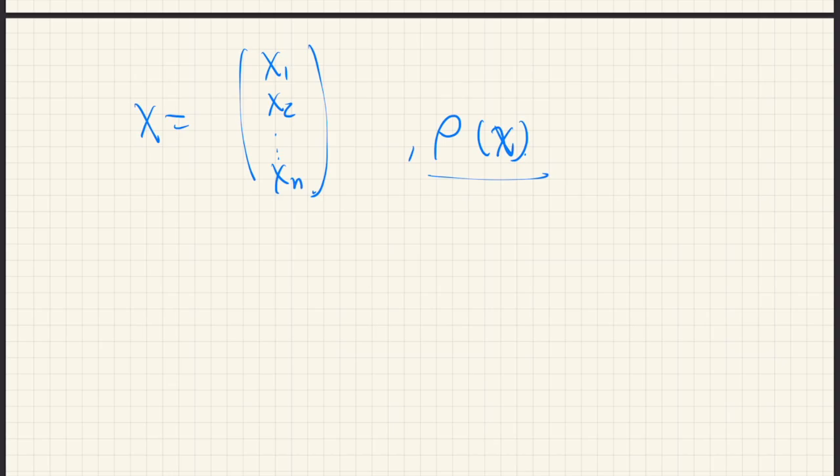Then the covariance matrix, let's call it sigma, is defined as this.